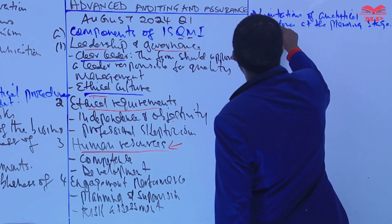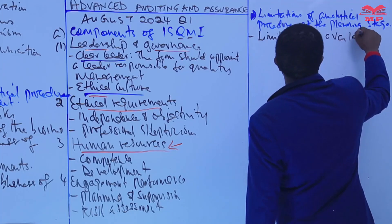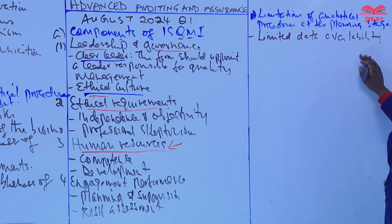Limited data availability at the planning stage. The auditor may not have sufficient financial data for the current period. At the planning stage, auditors may have limited access to financial data for the current period, which may make it difficult to perform meaningful analytical procedures. The auditor may not have sufficient data which he can use to perform analytical procedures, and that is the limitation.